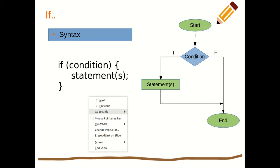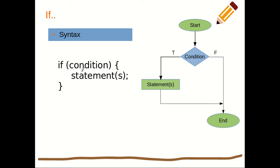Let's look at the syntax of if. We have the if condition — if this condition evaluates to true, these statements will be executed. If the condition does not evaluate to true, we exit the control structure. The flowchart shows: if the condition evaluates to true, the statements are executed; if it evaluates to false, we just end and exit from that control structure.